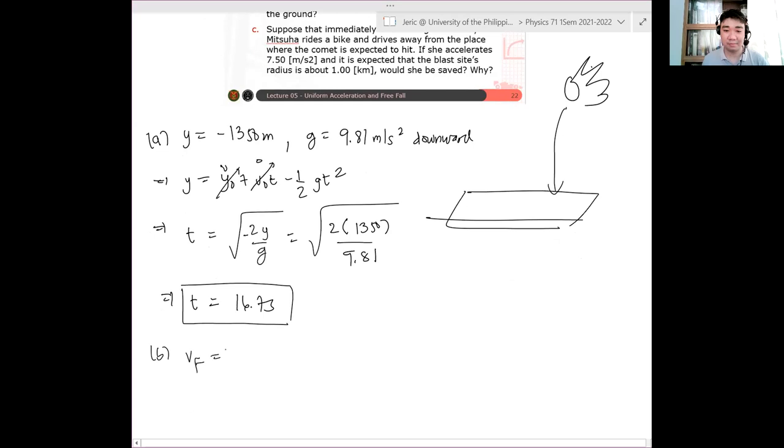Okay. Letter B. What is the final velocity? So we will use what? Velocity time. Yes, we will use the velocity time. So V equals V naught minus G T. We now have our time here. So we can use that time to determine the total velocity of the comet upon reaching the ground.